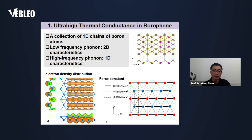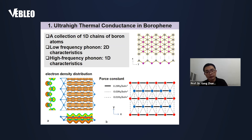We use DFT to study the electron density distribution and the force constants of this material. We found the electron density is non-uniform — concentrated along one direction. And for the force constants, the force constant along the x-direction is about 30 times that along the y-direction. So borophene is a 2D material, but it can be seen as a collection of 1D chains of boron atoms. This is the reason for the 1D phonon transmission behavior at high phonon frequencies. For high-frequency phonons in borophene, all these phonons transport along the x-direction without scattering from the y-direction. This is the reason for the ultra-high thermal conductance in borophene.